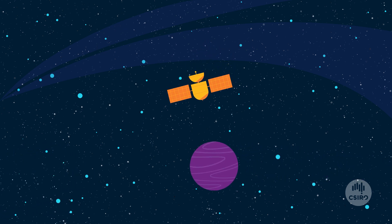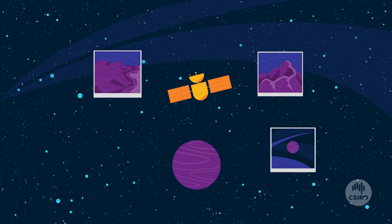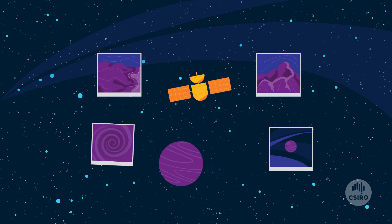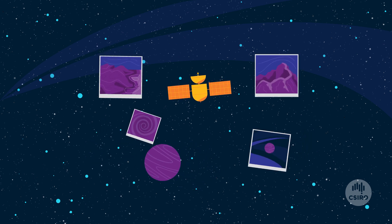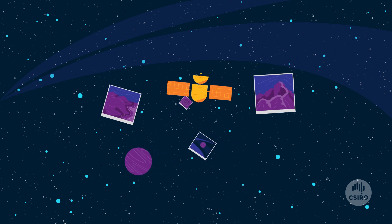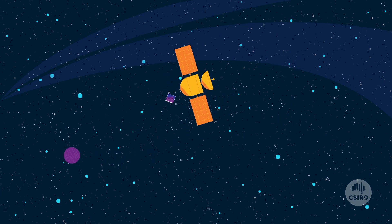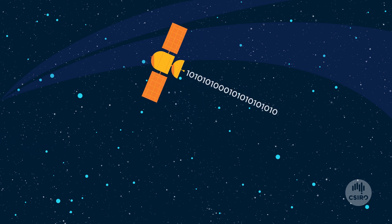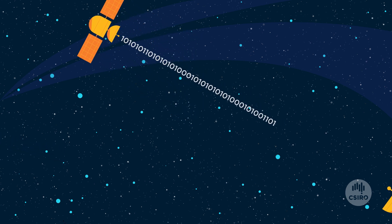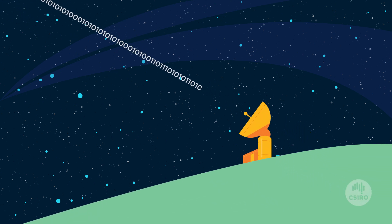Spacecraft gather a lot of data. This can be pictures or measurements of the temperature and pressure of a planet's atmosphere, the strength of its gravity or its magnetic field. The information is digitized into binary code, ones and zeros, then converted to radio waves and beamed to Earth.